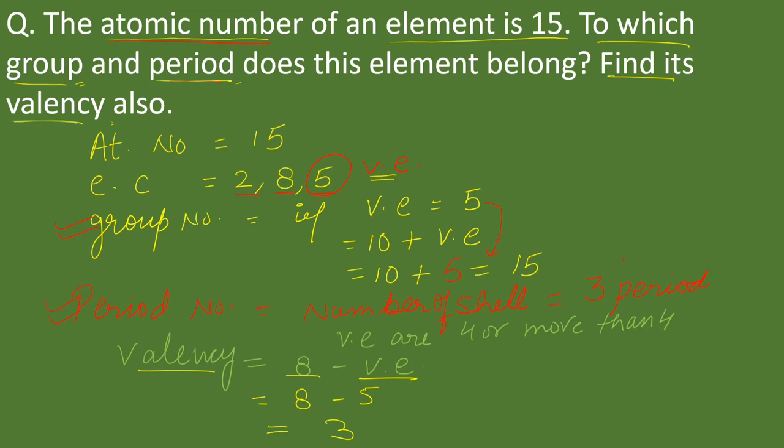So, group number 15, period number 3 (third period), and valency is also 3. This is the bifurcation of marks. You need to learn the formula to calculate group number, period number, as well as valency.